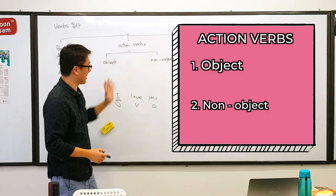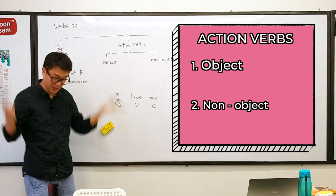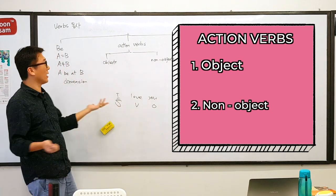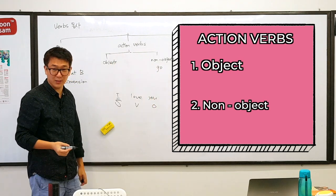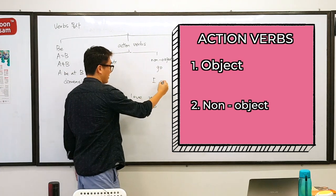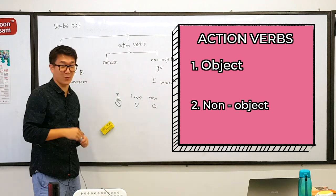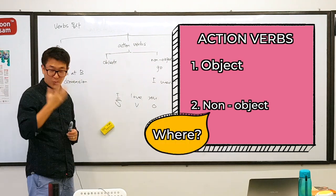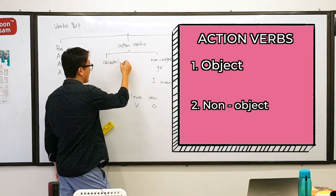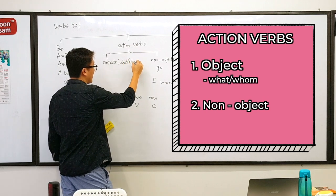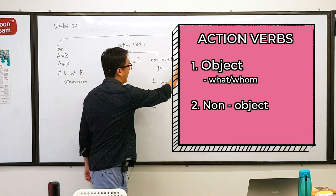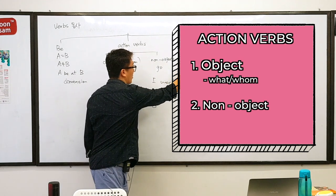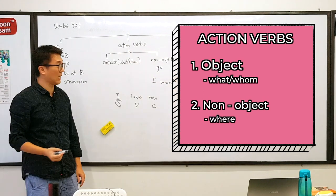Here are non-object verbs. What are the action verbs that do not require an object? For example, go. Why you don't need an object? Put it this way. I said this one to you. I went. What's your next question to me? Where? An object is what? Or particularly whom? What or whom? And this one requires only where. You don't need an object.